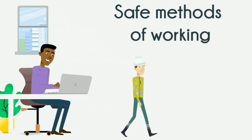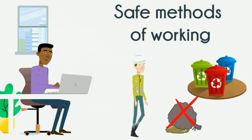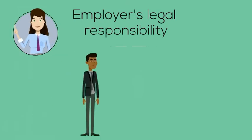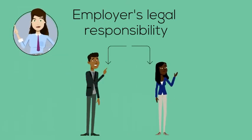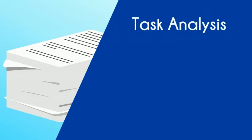Following this, it defines safe methods of working to eliminate those hazards that have been identified or minimize any risk associated with them. It's an employer's legal responsibility to develop safe systems of work, and this involves competent persons and employees who will be carrying out the work. Safe systems of work are normally developed using a process called task analysis.